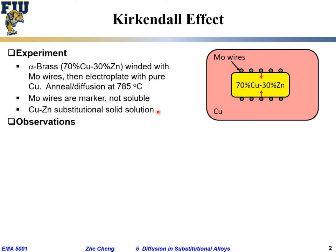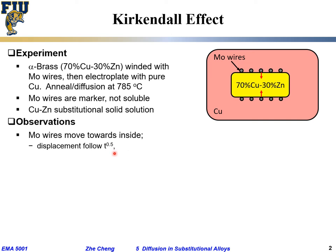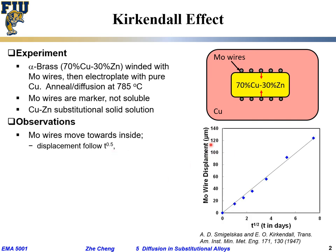Then they heated the system and observed what happened. The first observation: the molybdenum wires moved toward the inside — toward the brass side. Second, when they tracked the displacement of the wire over different times, they found the displacement follows the square root of time. Plotting displacement versus square root of t — not t, but √t — gives a nice straight line.